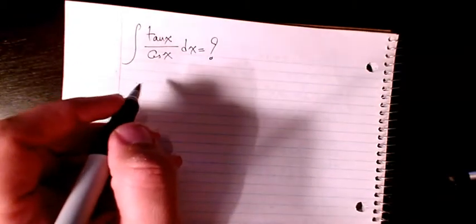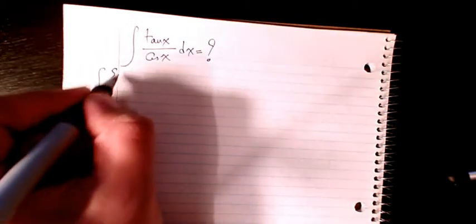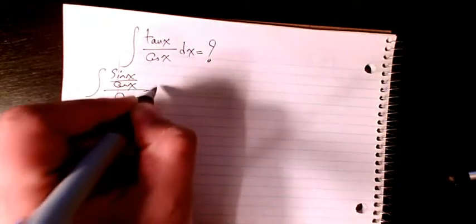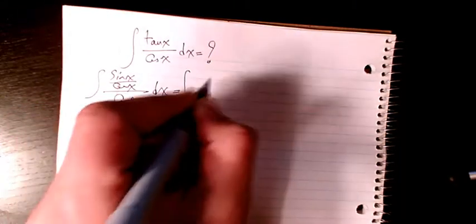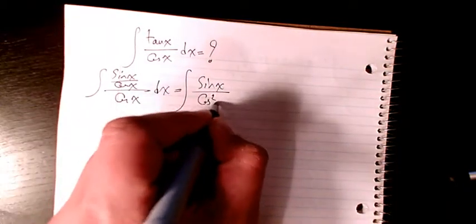I will use trig identity and substitution method. Tan x is sin x divided by cosine x, divided by cosine x dx. So it will be sin x divided by cosine squared x dx.